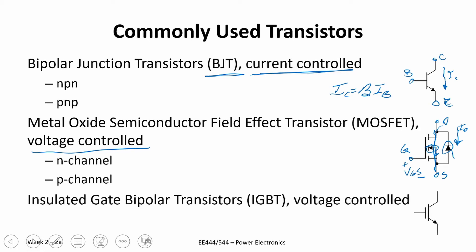Finally, the insulated gate bipolar transistor, or IGBT — we won't go into too much detail on this one. The key takeaway is it is a voltage controlled device, very popular, typically for higher voltage applications. It's somewhat the best of both worlds — if you look at how it's manufactured, it is a blend between a PNP junction transistor and a MOSFET, and it has that oxide gate. It's still called the gate, this is the collector, and this is the emitter. So the three commonly used power devices are BJTs, MOSFETs, and IGBTs.